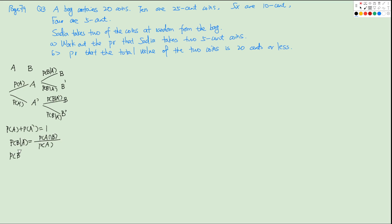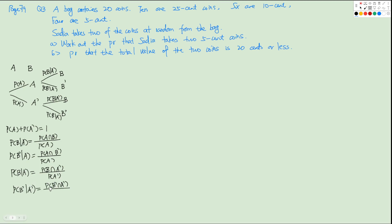P(B|A) equals P(A∩B) over P(A). And P(B'|A) equals P(A∩B') over P(A). Also P(B|A') equals P(B∩A') over P(A'), and this one equals P(B'∩A') over P(A').